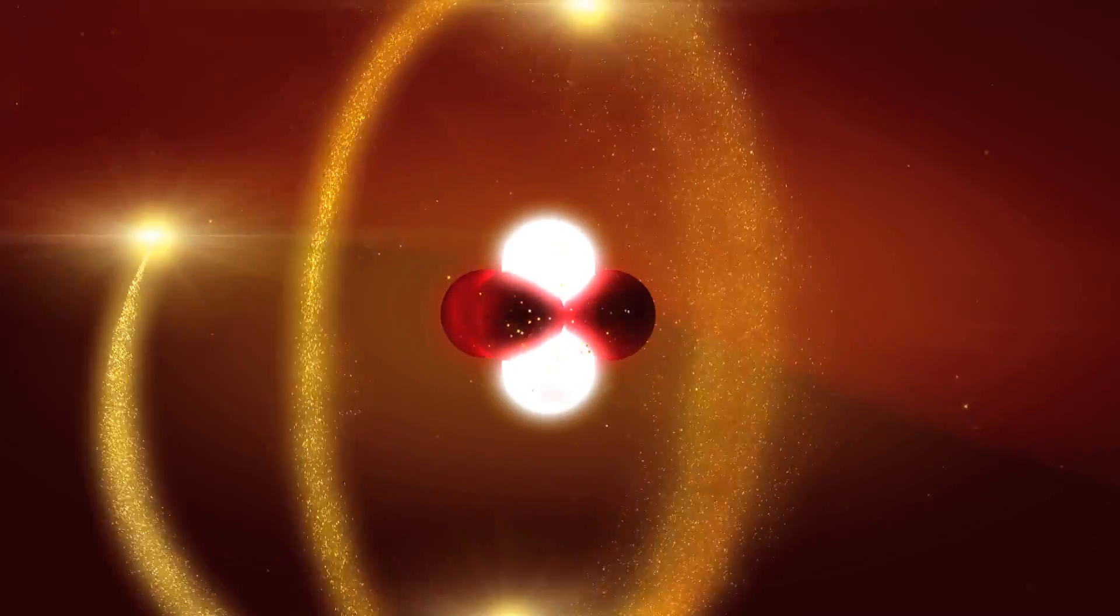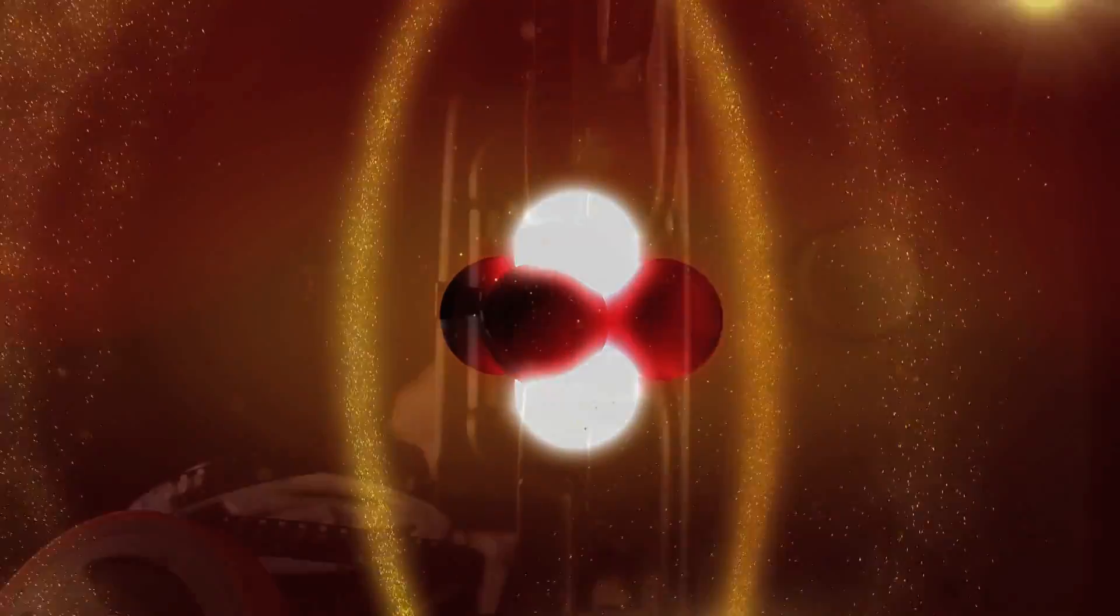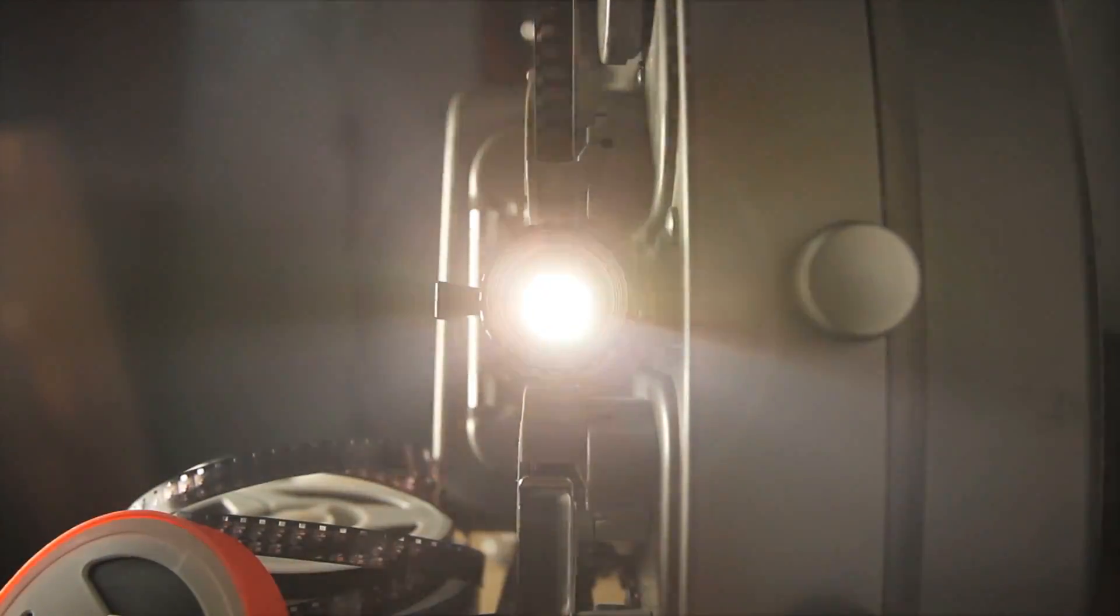Neutrons, which have no charge, cannot be focused by glass lenses to form images the way that light beams can. Instead, scientists use a silicon block with three precisely machined thin blades that act like mirrors to direct the neutron beam onto its target.